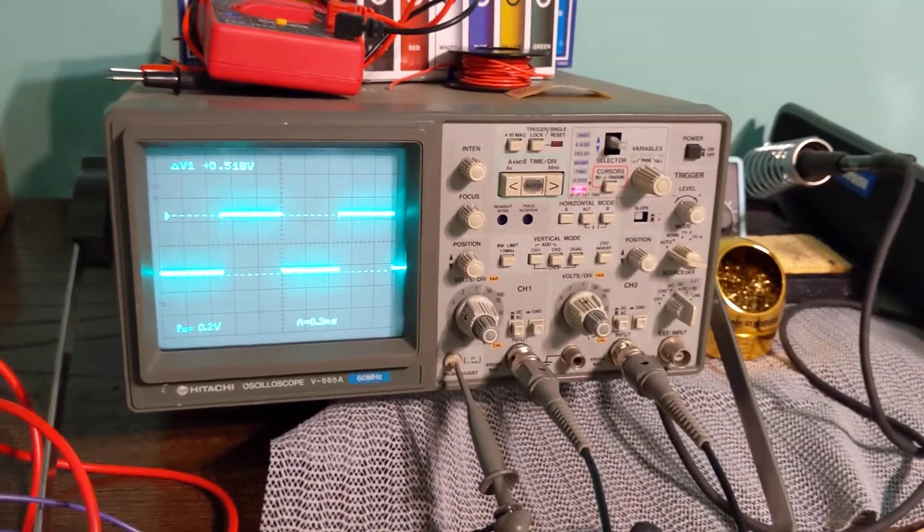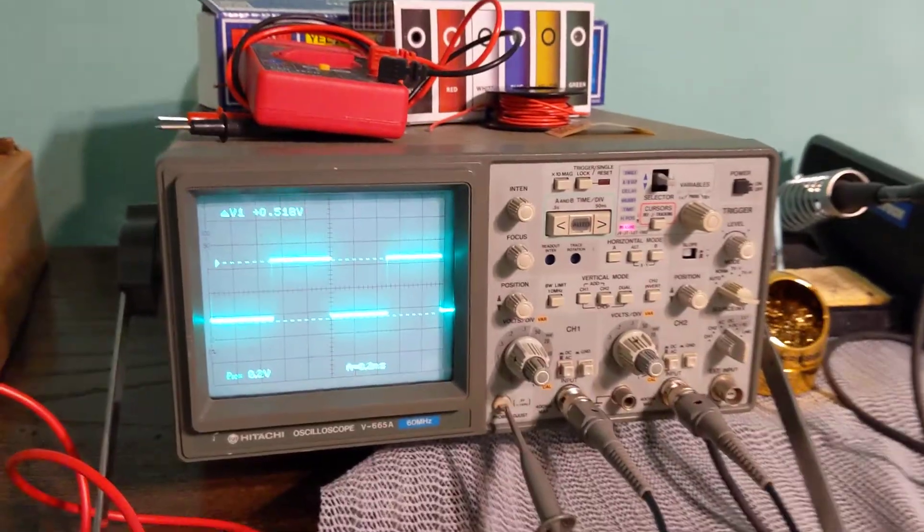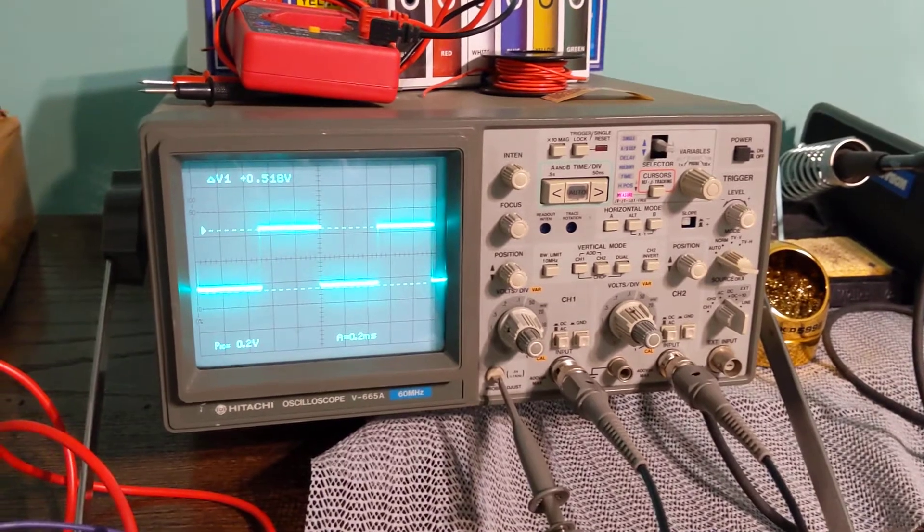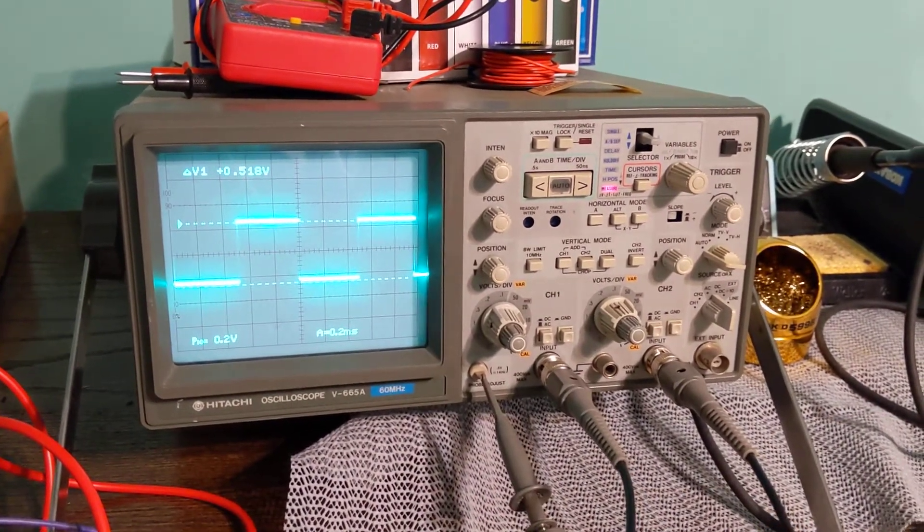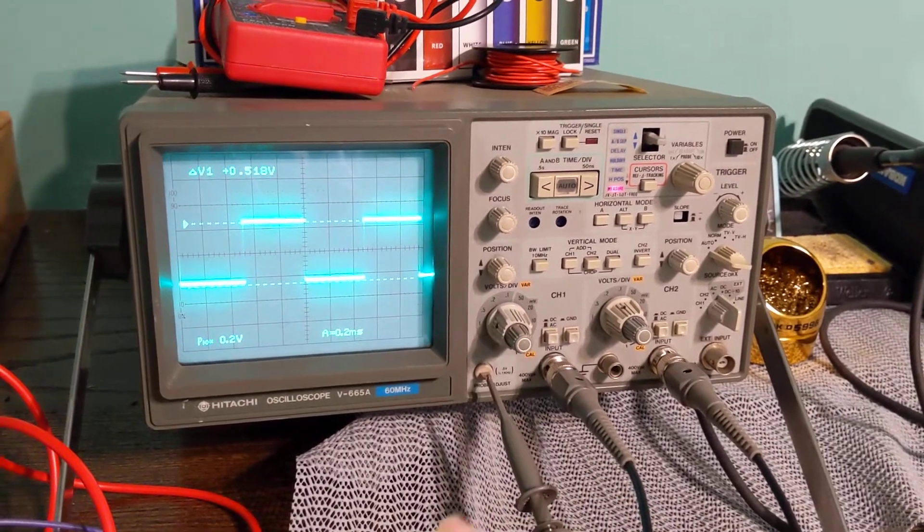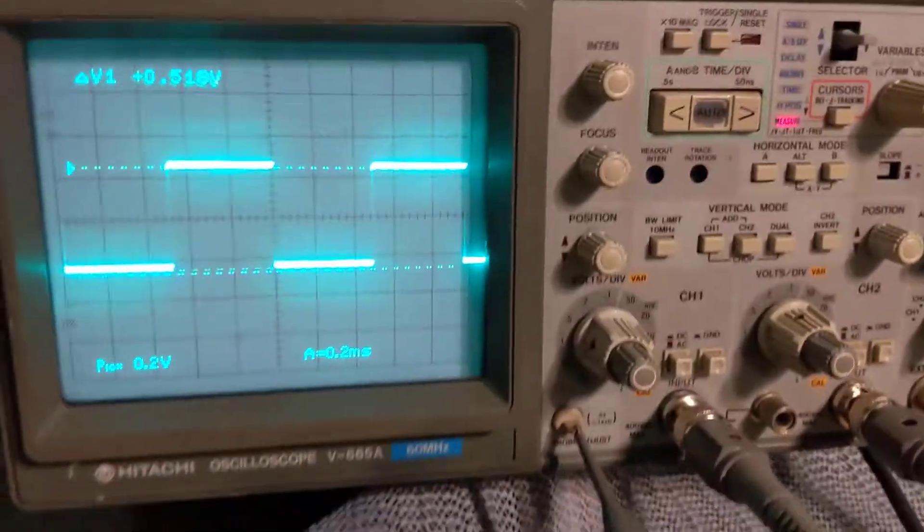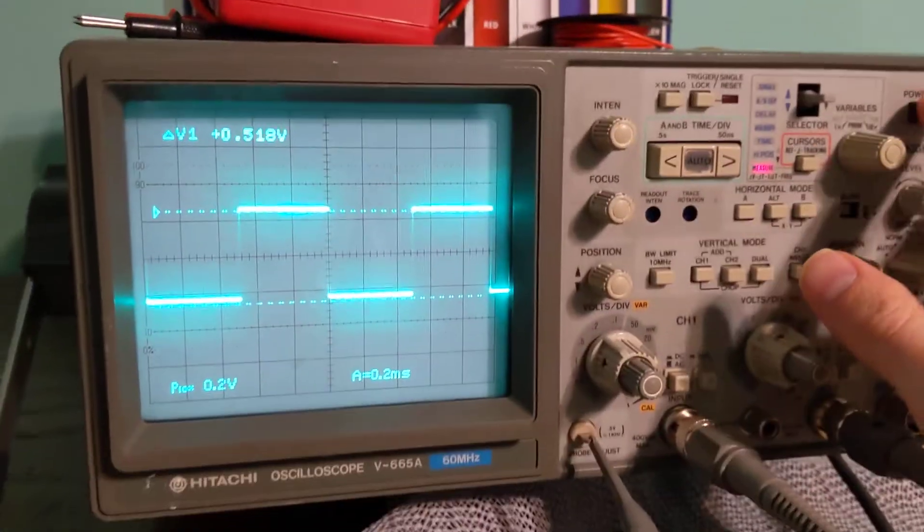Alright, I'm going to film this so I remember. This is a how-to roughly calibrate the probe on a Hitachi V665. I got the manual but it's not very helpful, so I'll just start with this powered off.